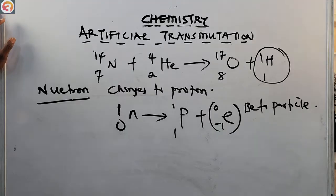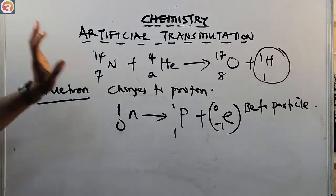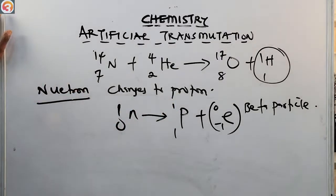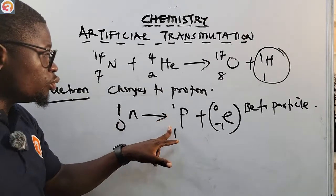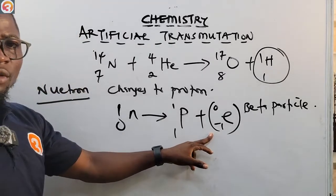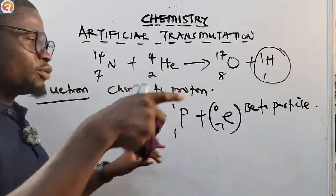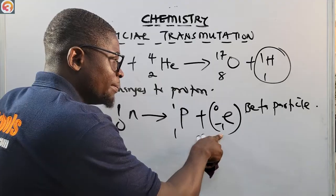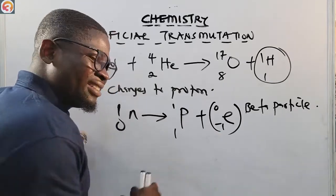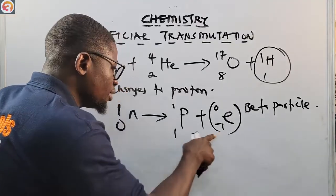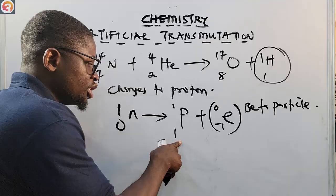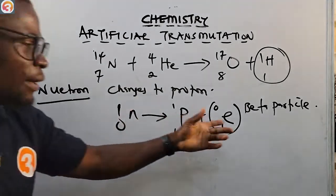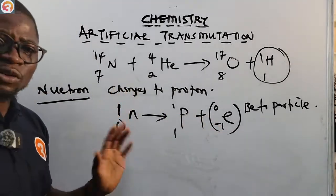When a neutron in a nucleus changes to a proton, it is the same as beta emission. A beta particle is formed and emitted. When a proton is produced, a beta particle is emitted. This always leads to an increase in the nuclear charge — the nuclear charge changes from zero to one — because protons are produced by beta emissions.